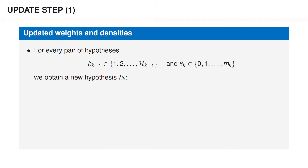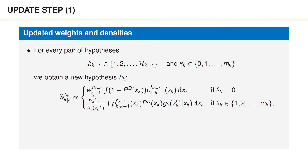In the update step, we obtain a new hypothesis h k for every pair of hypotheses h k-1 and theta k. This is again analogous to the conceptual solution. The difference is that instead of h k-1, we then had a sequence of associations up to time k-1, and instead of h k, we had a sequence of associations up to time k. The weight for a combination of hypotheses h k-1 and theta k is proportional to the weight of h k-1 times this integral if theta k is equal to zero, and this expression if theta k is greater than zero.